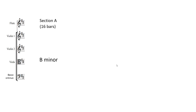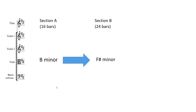Bach is a genius, and what we need to learn from Bach when composing is not to stay in the same key all the time. It can get boring — just like humans, we get very bored if we stay in the same place all the time; we need stimulation. So what Bach does is when we get to Section B, he changes the key and adds in different sounds — he goes to F sharp minor — and towards the end of the piece we go back to B minor.